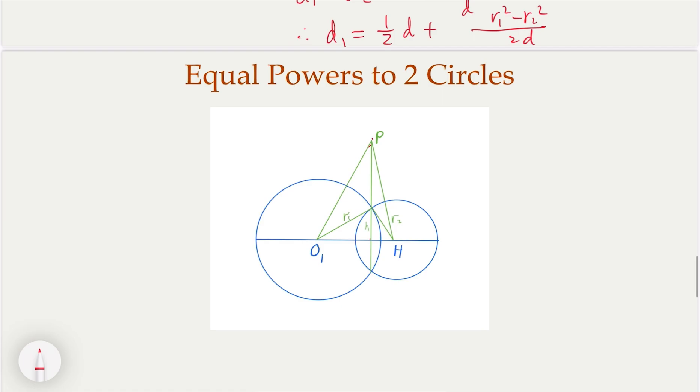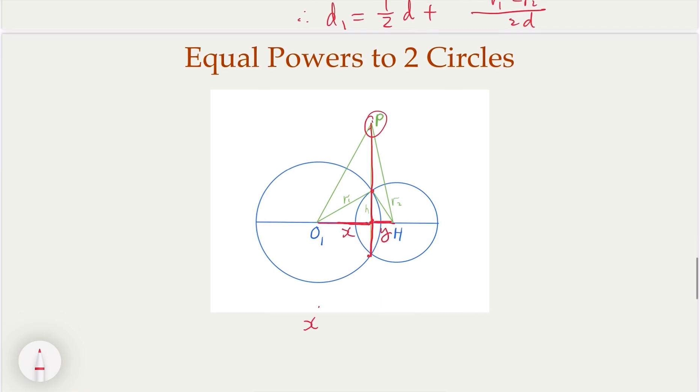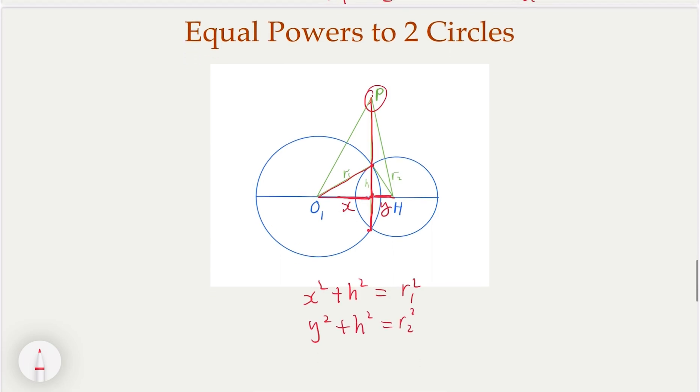So what if you have intersecting circles here? We claim that in that case, P must be on the straight line through these two points here. Why? Because we can say this position here satisfies the quantity that if this is X, this is Y, the distance here, you know that X square plus H square equals R1 square. And Y square plus H square equals R2 square. If you do the subtraction, you get X square minus Y square equals R1 square minus R2 square.